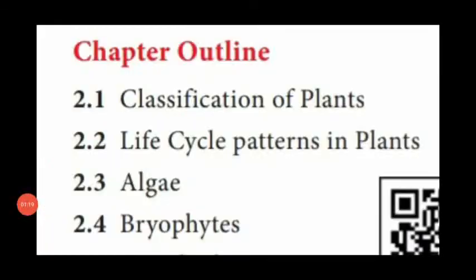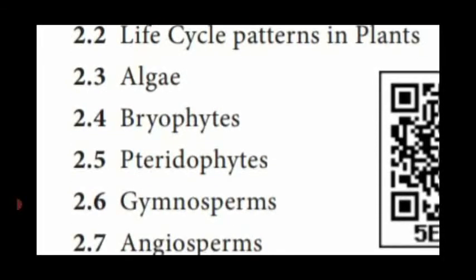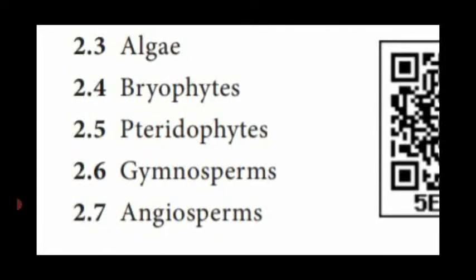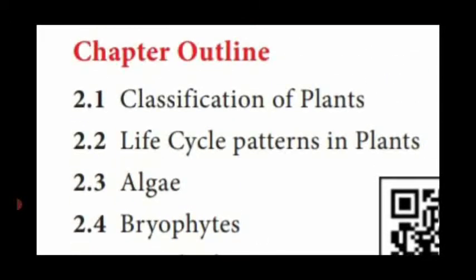In this video we are going to see the plant kingdom classification, characteristic features, life cycle of organisms, different methods of reproduction, their habitat and habit, and the structural and functional organization of organisms. The chapter outline covers: classification of plants, life cycle patterns in plants, algae, bryophytes, pteridophytes, gymnosperms, and angiosperms.